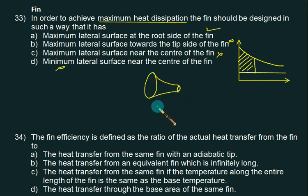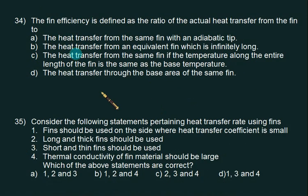The fin efficiency is basically ratio of the actual fin to the maximum possible fin. The maximum possible fin is that fin along which the temperature of the fin along the surface remains constant. If we have a temperature distribution, this is the actual fin, this is the atmospheric condition, and this is the ideal fin. Choice C is correct.